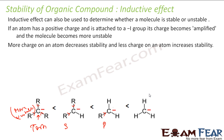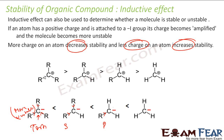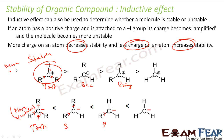We know that more charge on a particular atom decreases stability. In the case of a carbocation — a positively charged carbon — the alkyl groups donate electrons via inductive effect, nullifying the positive charge and making it stable. So in the case of carbocations, the tertiary is more stable. But in the case of carbanions (negatively charged carbon), the tertiary is more unstable. This is all because of the inductive effect — it can make things stable or unstable depending on the charge.